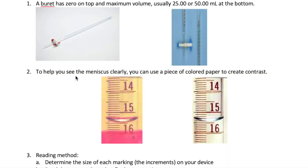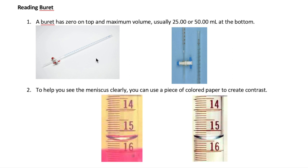A burette is different from a graduated cylinder because the zero mark is at the top and the maximum — either 25 or 50 milliliters — is at the bottom. That's the opposite of a graduated cylinder. At the bottom of the burette is the stopcock, which you can turn to open or close the burette so liquid can flow out through the tip. At the top is where you add your solution, usually using a funnel.